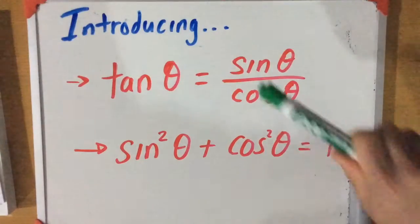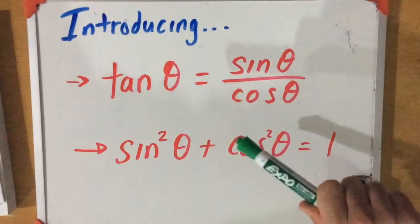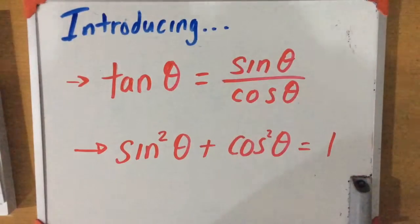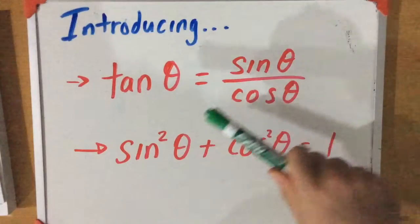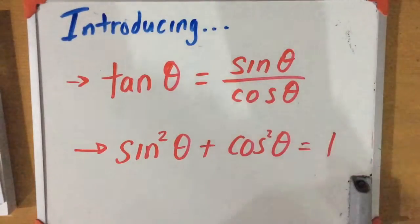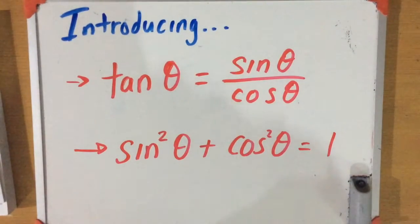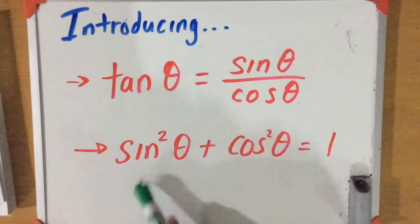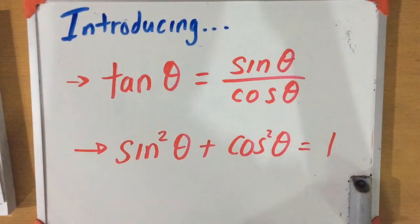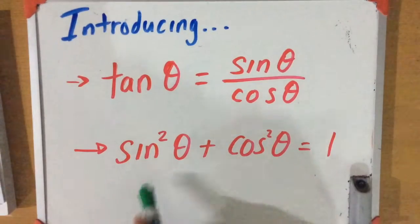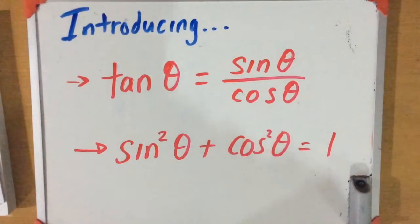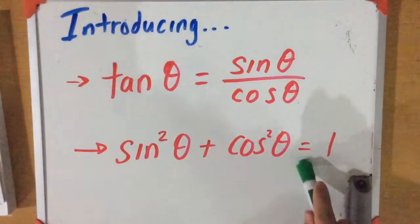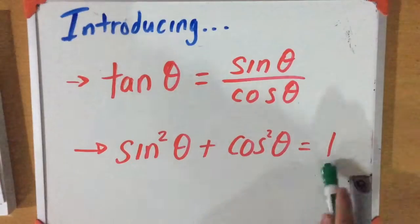I want to introduce two identities to you. We have five in total that we're going to go through this lesson. The first one is tan theta is equal to sine theta over cosine, and vice versa. The second one, which is our Pythagorean identity, comes in very handy: sine squared theta plus cosine squared theta is equal to 1, and vice versa.